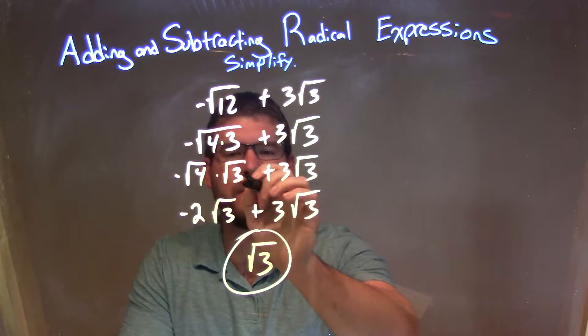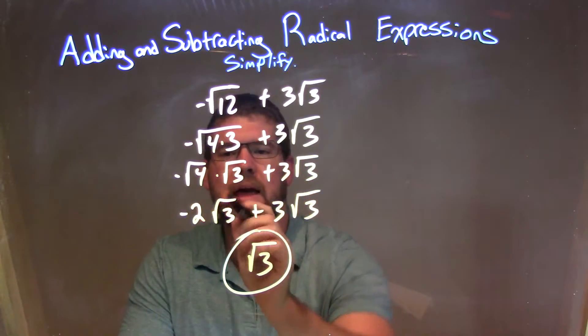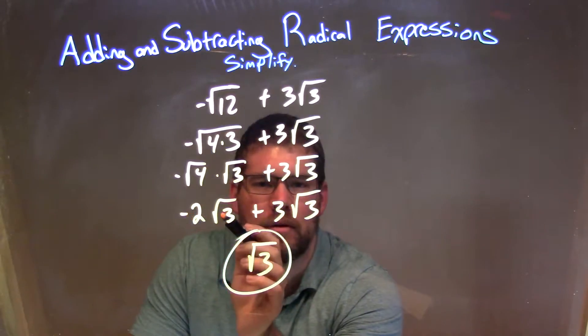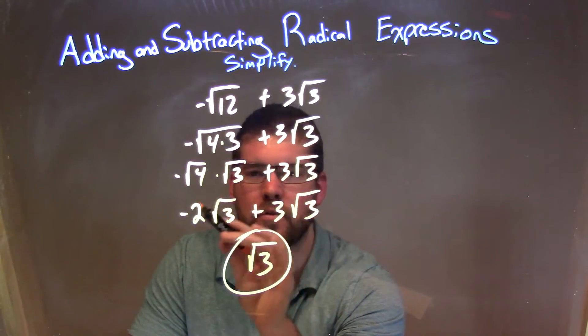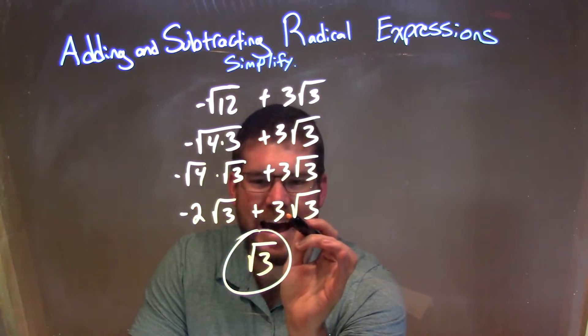Separate it out to be square root of 4 times the square root of 3. Square root of 4 is 2. At this point, the negative 2 out there, negative 2 square root of 3 plus 3 square root of 3, they have the same square root. We look to the number in front of the square root, negative 2 plus 3, add together to be a 1.